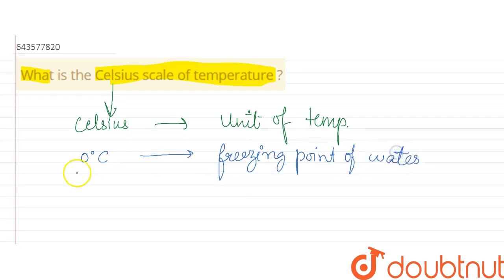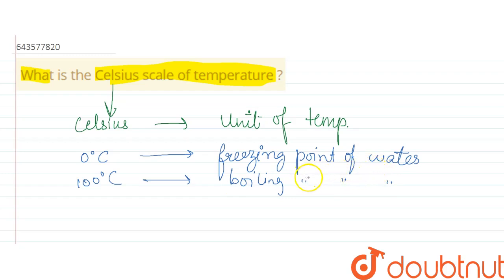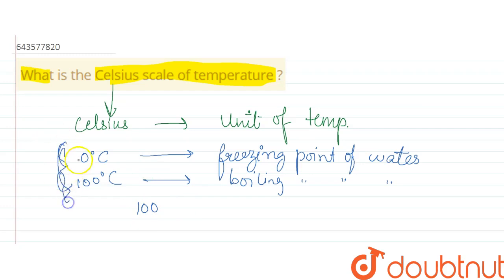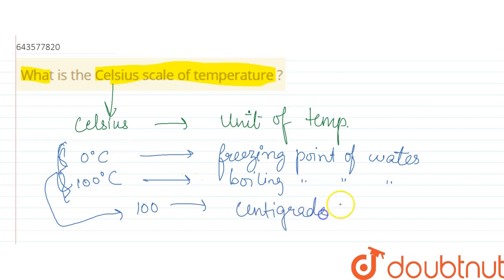100 degree Celsius is the boiling point of water. It is sometimes called the centigrade scale because there is a 100-degree interval between these two defined points. Since the difference is 100, it is also called the centigrade scale.